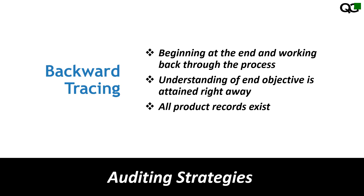In backward tracing, we begin at the end and work backwards. Using the same example — input, process one, two, three, four, then the customer — as an auditor you don't begin at process one; you begin at process four or at the end. In a real example, you go to the final warehouse where finished products are kept and trace all the requirements back.